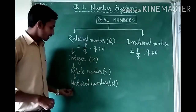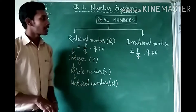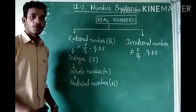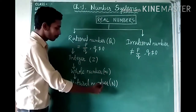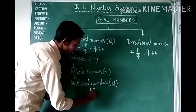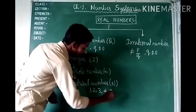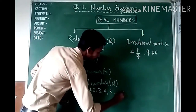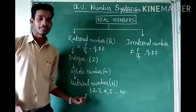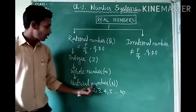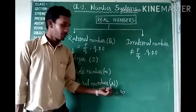First one is natural number. We know natural numbers are the counting numbers which we use for counting purposes. All those numbers are called natural numbers — like 1, 2, 3, 4, 5, up to infinity. Natural numbers are denoted by capital N.